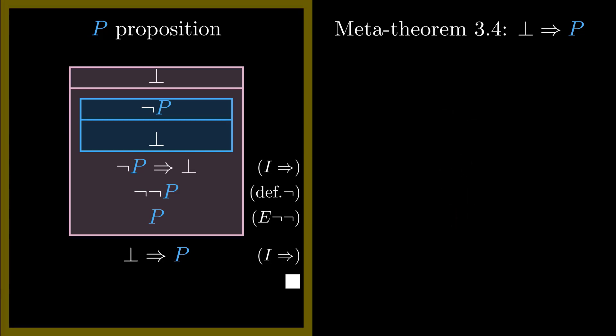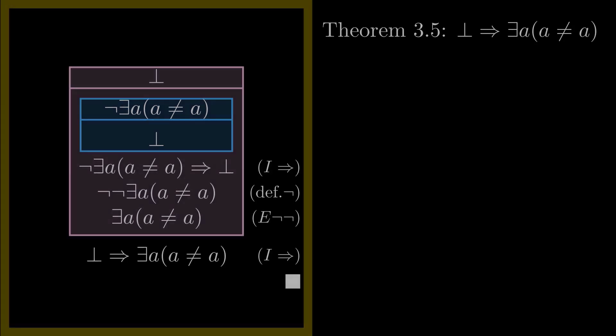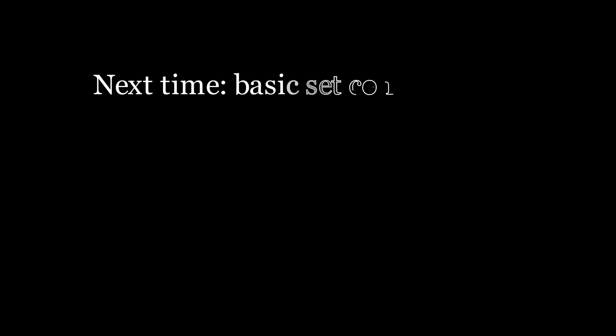If we wanted to prove the principle of explosion for a particular P, say, there exists a such that a is not equal to a, we could replace everywhere P appears in this metaproof with that proposition, and get a regular proof of the principle of explosion for that proposition. A metaproof is basically a template for a proof that can handle any proposition we want. That's it for this video. Next time, we'll finally get started on working with sets by introducing some basic, but still very useful, set constructions. See you then!